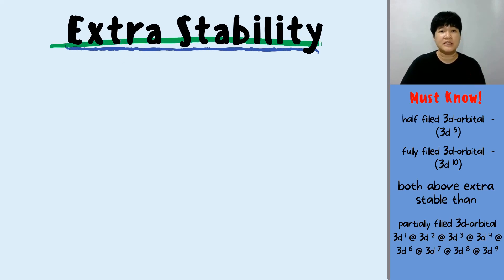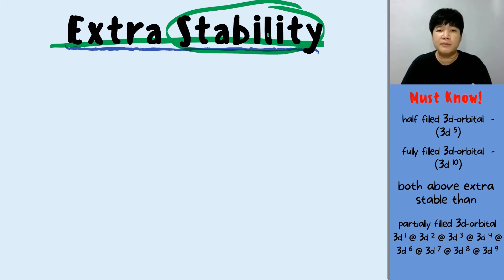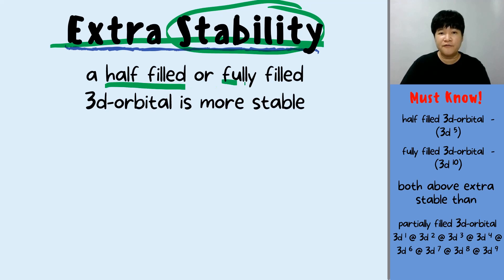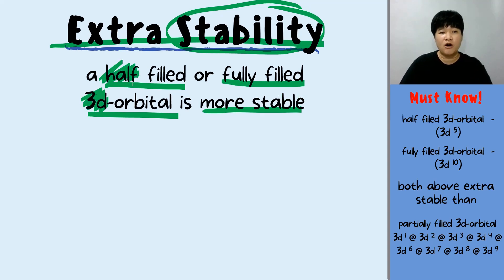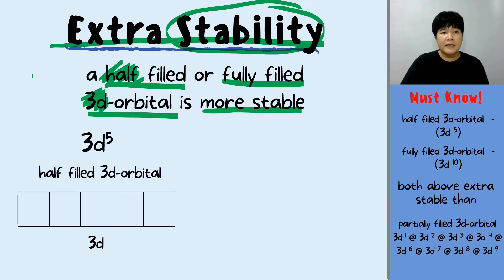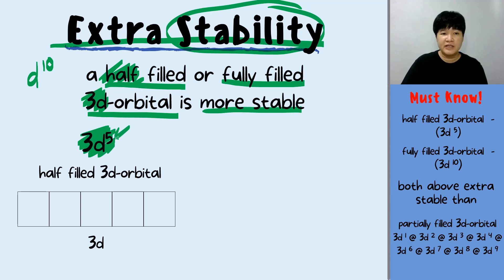Why do chromium and copper behave differently? Simple — extra stability. They behave differently because they want to become more stable. What gives chromium and copper extra stability? A half-filled or a fully-filled 3d orbital is more stable than others. A half-filled 3d orbital will look something like this — we know that the d orbital maximum is 10 electrons, so a half-filled 3d orbital means 3d5, with five electrons in the d orbital.